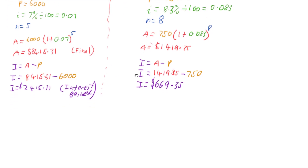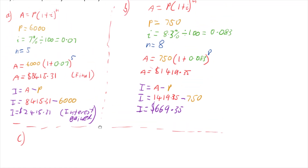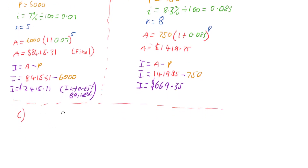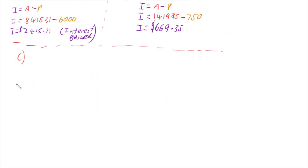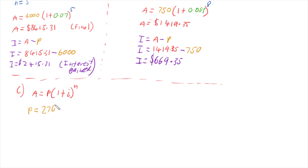Now let's move on to part C. It's the same rule: A equals P times 1 plus i to the N. We've got $2,760 invested at 3.7% per annum for four years, this time with monthly rests — so it's compounding monthly. Our principal P is $2,760.